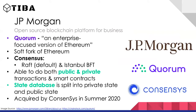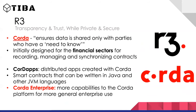JP Morgan had a project called Quorum — an enterprise blockchain for business. An interesting feature is that Quorum supports both public and private transactions: public works like normal transactions, while private transactions only reveal data to the parties who need to know. ConsenSys acquired Quorum from JP Morgan in summer 2020.